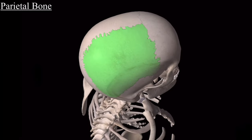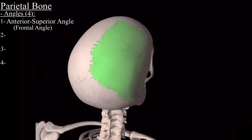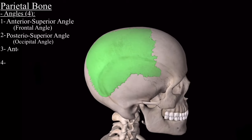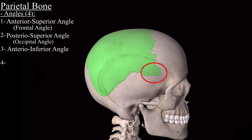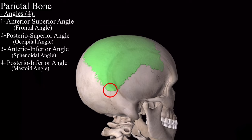Next are the four angles. The first is the anterior superior angle, also called the frontal angle because it is related to the frontal bone. The second is the posterior superior angle, also called the occipital angle because it is related to the occipital bone. The third is the anterior inferior angle, also called the sphenoidal angle because it is related to the sphenoid bone. The last is the posterior inferior angle, also called the mastoid angle because of its relation to the mastoid part of the temporal bone.